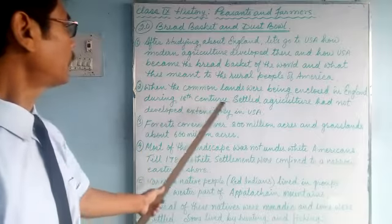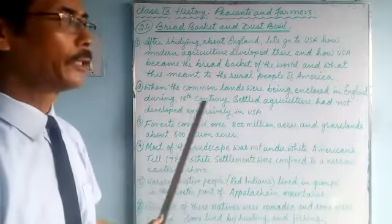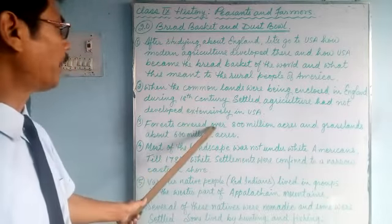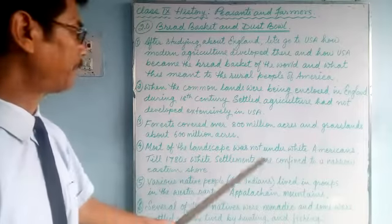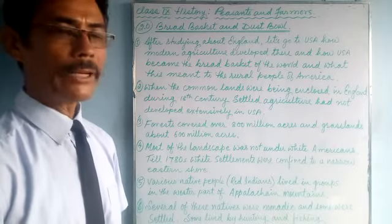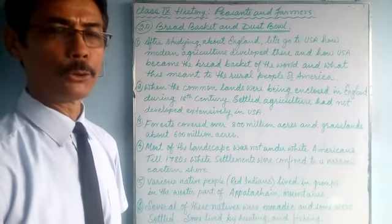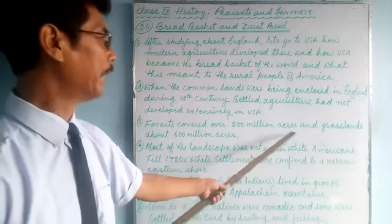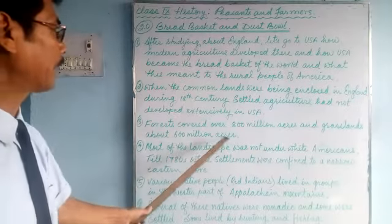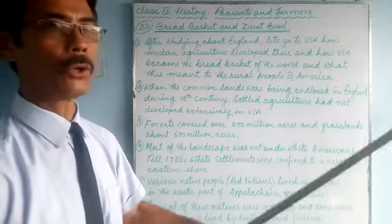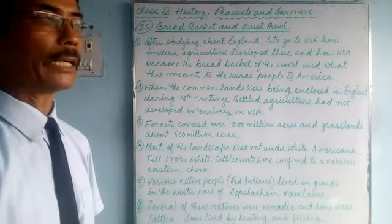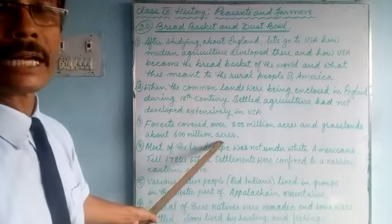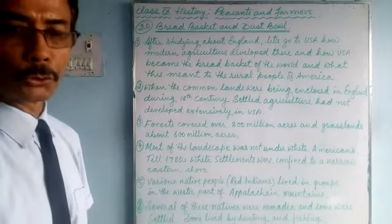While enclosures were happening in England during the 18th century, settled agriculture had not developed extensively in America. Forest covered over 800 million acres of land with wild animals, and grassland covered about 600 million acres. You can see tall grasses in the central part of America — it was largely grassland.